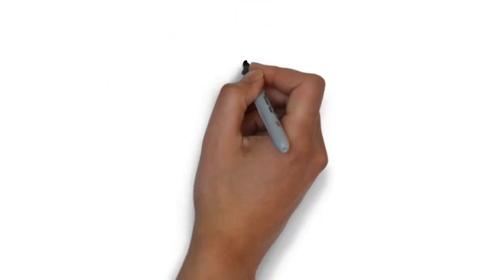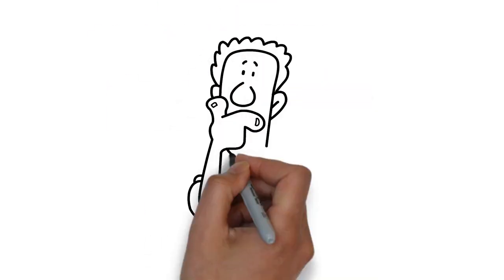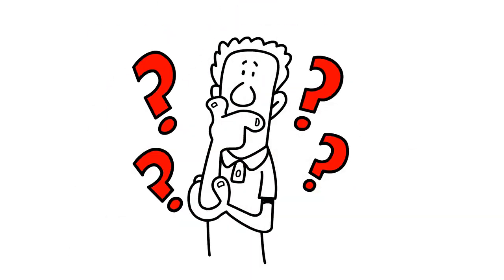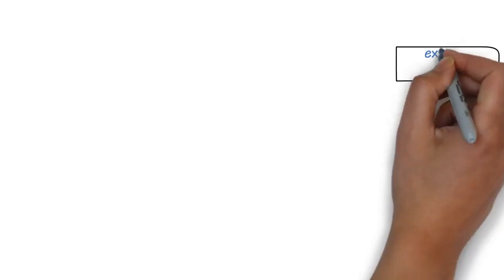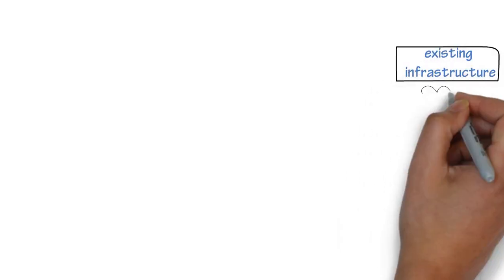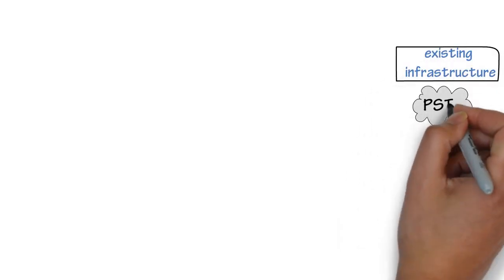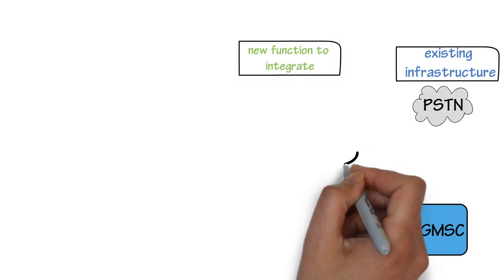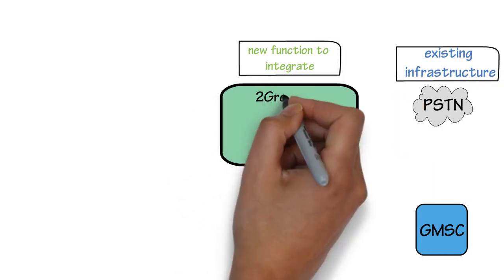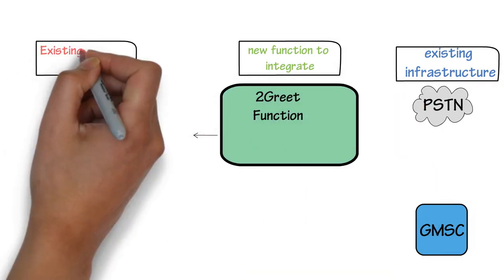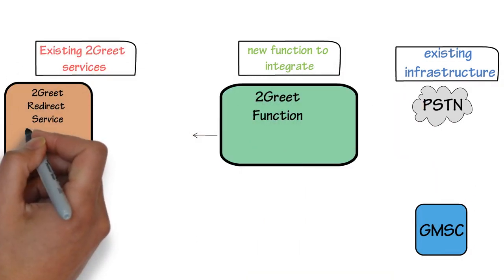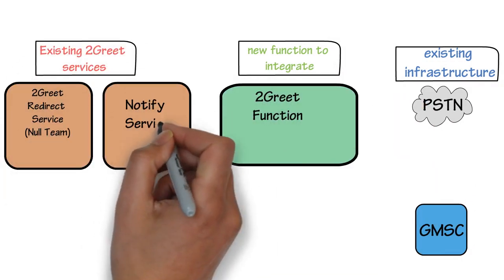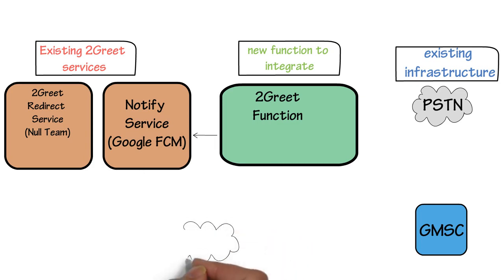What it takes to install 2Greet at a mobile operator. The 2Greet function is a value-added service that provides voice calls and USSD to Android phones over any IP network. The addition of 2Greet to the operator's network is designed to be minimally intrusive and preserve all existing functionality.